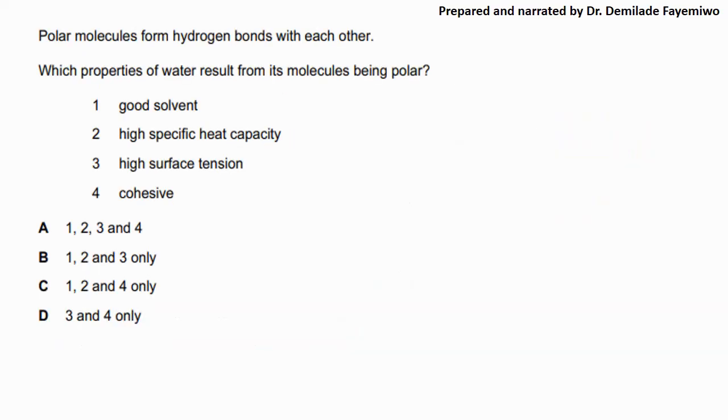This is a question from chapter 2. Polar molecules form hydrogen bonds with each other. Which properties of water result from its molecules being polar? So the first one says it's a good solvent which we know for sure. It has a high specific heat capacity that was discussed in the video on water. It has a high surface tension and it is cohesive.